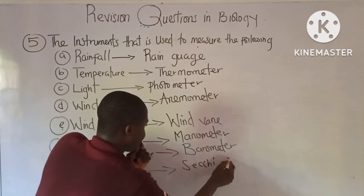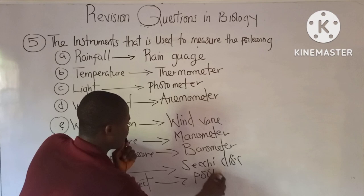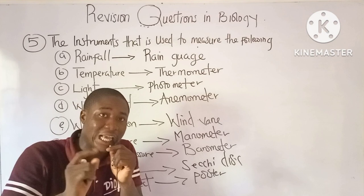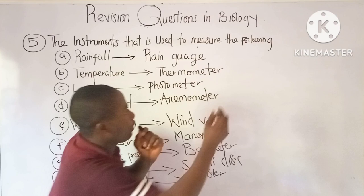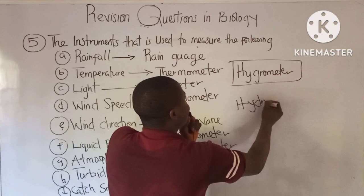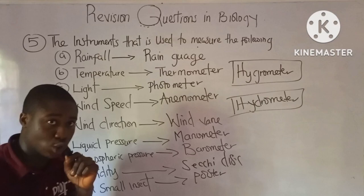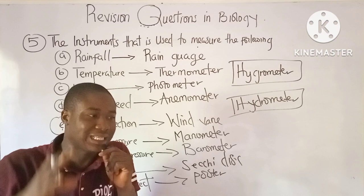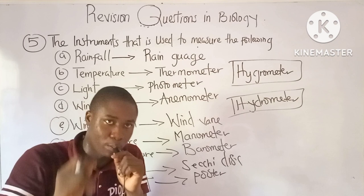The instrument used to catch insects is called the pooter. Relative humidity is measured by the hygrometer, while the hydrometer is used to measure water density. Both are different instruments. All of these are abiotic components, and when combined with biotic components, they form the ecosystem.